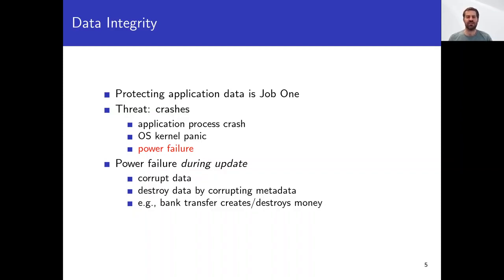Protecting the integrity of application data is the highest duty of computing systems. Sudden failures of every kind are the main threat to application data integrity. Crashes due to bugs in applications and operating systems are major worries, but the worst threat is power failure. Think about what might happen if power fails while persistent application data is being updated. The data could be corrupted directly, or it could be effectively destroyed if its metadata are corrupted. Consider the concrete case of an application that transfers money from one bank account to another.